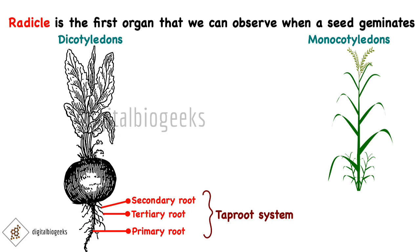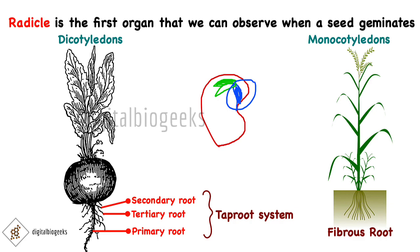Now let's understand the case of monocotyledons. Here the primary root in seeds is short-lived — they wither off and are replaced by a number of roots that arise from the base of the stem. This is known as the fibrous root, and we can see this in wheat plants.